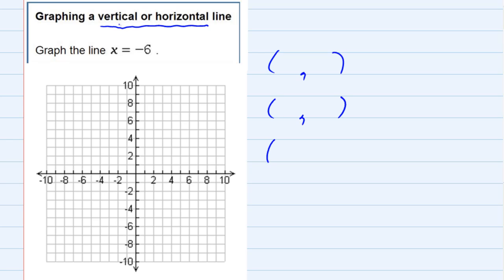Since I'm told that x equals negative six, that means that the x coordinate for all of my points on this line has to be negative six.